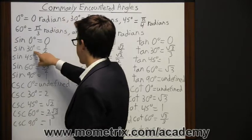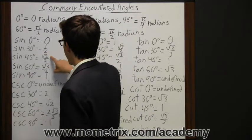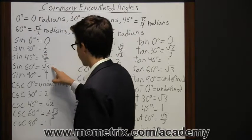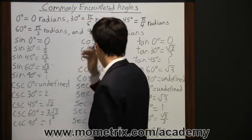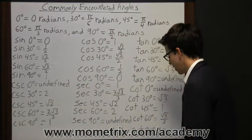Sine zero degrees we already said is equal to zero. Then sine of 30 degrees is equal to one-half. Then sine of 45, square root of 2 over 2. The sine of 60, the square root of 3 over 2. And the sine of 90 equals 1. So you may want to write these down as we go.